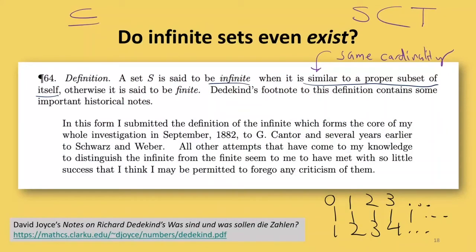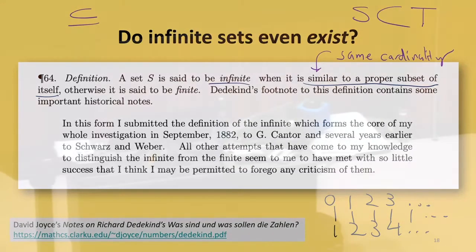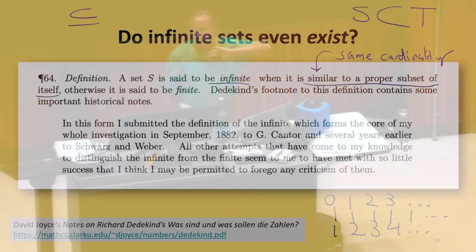Same cardinality. There's a clear bijection between the two sets, and according to Dedekind's definition, if we can remove an element making it a proper subset without changing the cardinality, then it's infinite. So this definition starts to seem pretty sensible now.